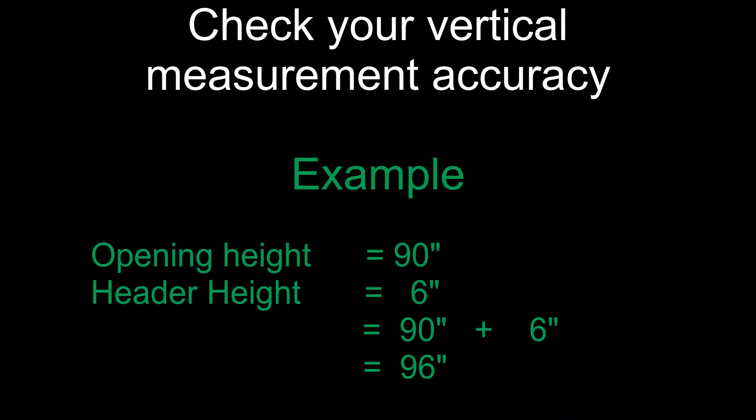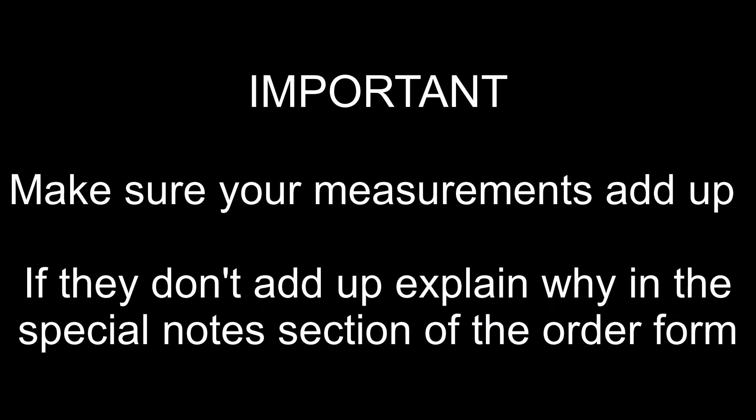Check your vertical measurement accuracy. Example: opening height is 90 inches, header height is 6 inches. Your floor to ceiling should equal 96 inches. Important: make sure your measurements add up. If they don't, explain why in the special notes section of the order form.